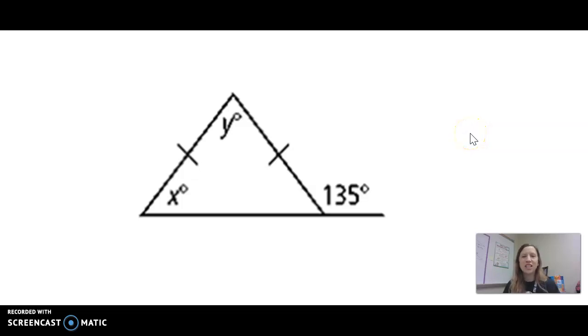Alright guys, here's an extension of an isosceles triangle. This one might be a little trickier because normally if we're trying to find a missing angle of an isosceles triangle we already have one of the angles, but in this isosceles triangle we don't know any of the angles and that is a struggle.